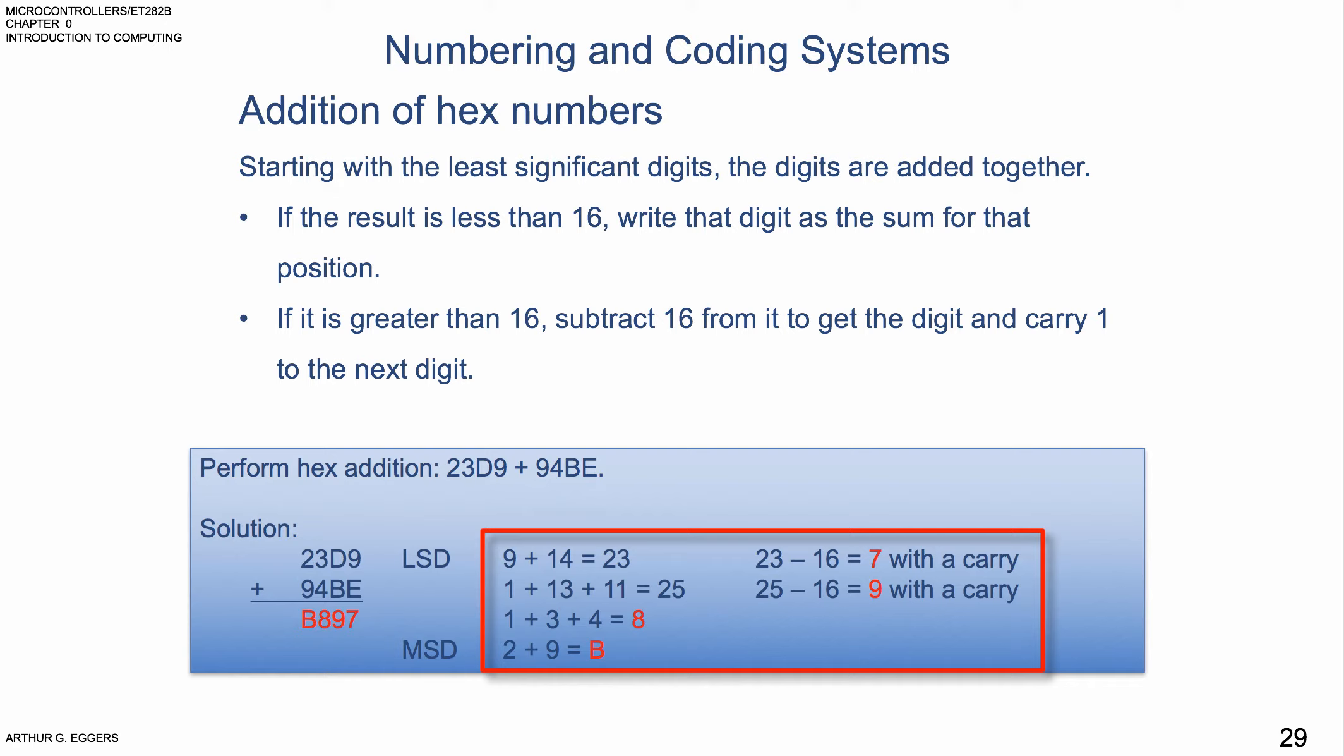The next column then, the carry, 1 plus 3 plus 4 gives us an 8. Not bigger than 16, we're good to go. And then finally in the most significant column, 2 plus 9 gives us a hex B. So our answer then becomes B897, dealing with all of the carries and applying the rules for adding hex.